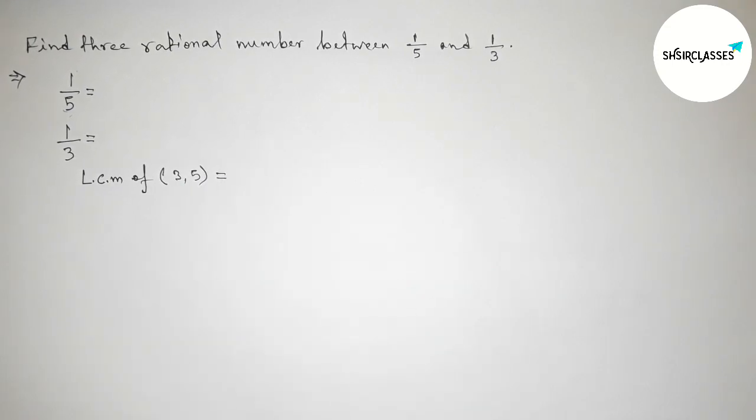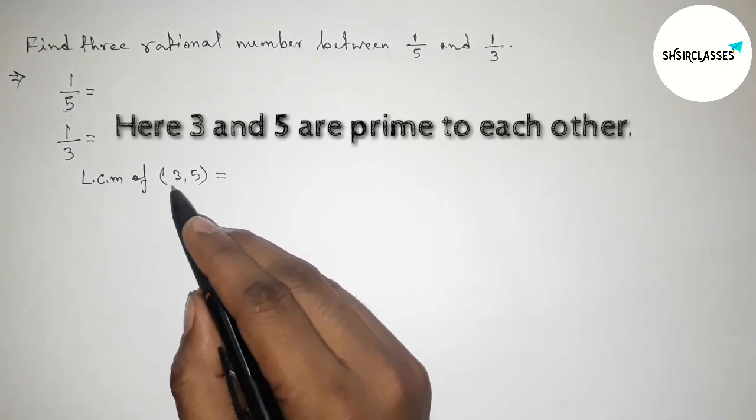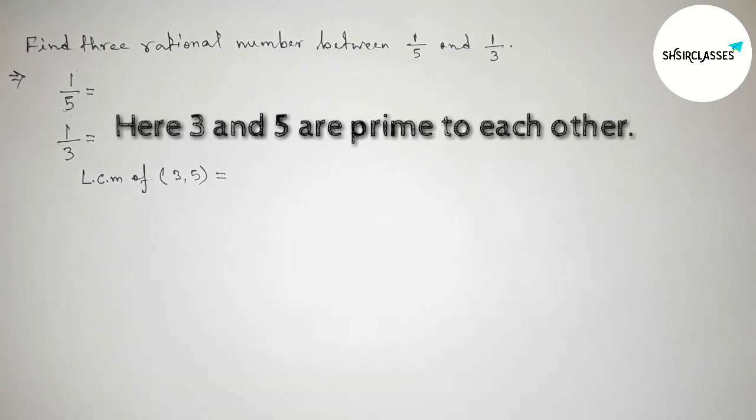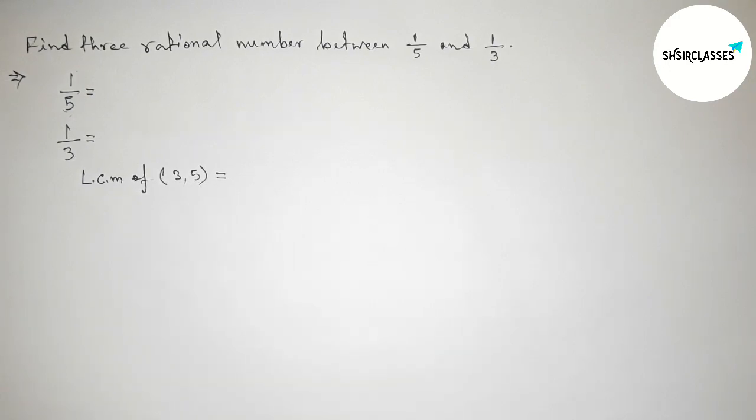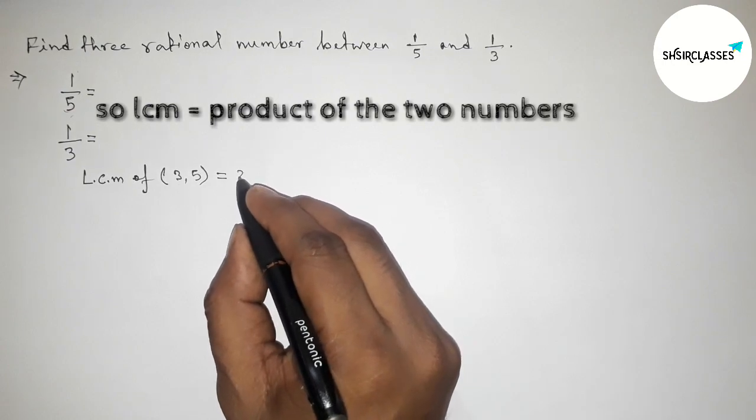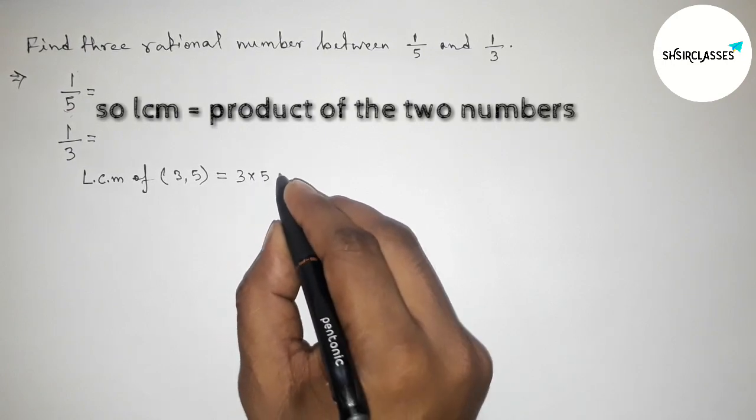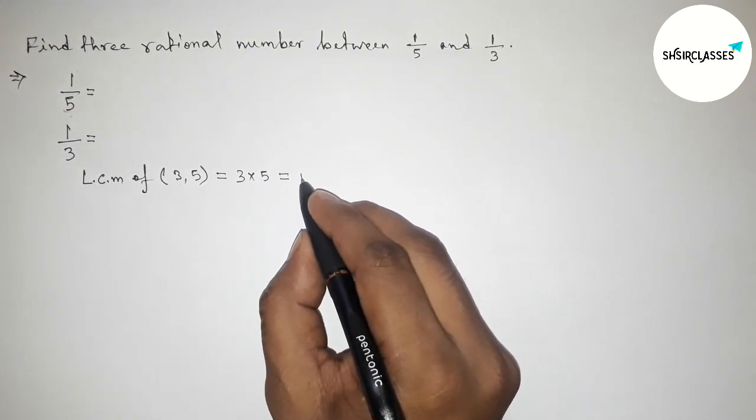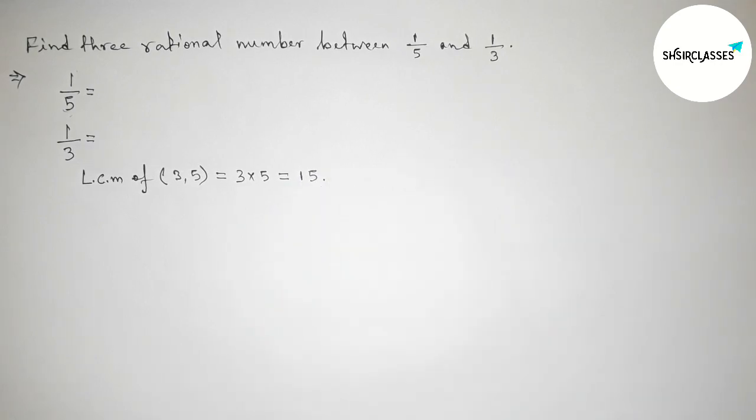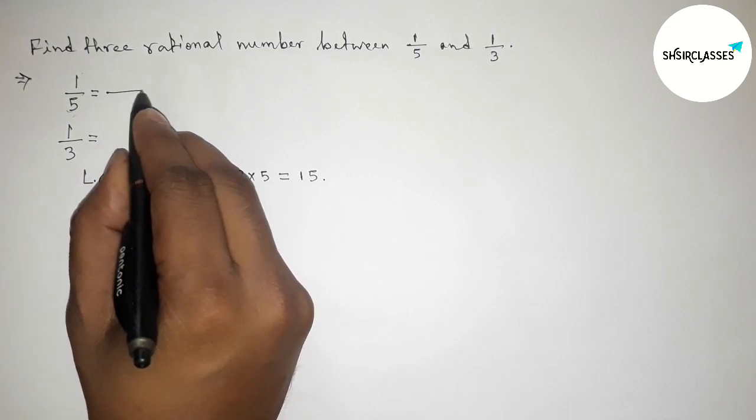Finding LCM of 3 comma 5. Here 3 and 5 are prime to each other, so the LCM will be the product of the two numbers. So 3 into 5, that is 15. We have to make the denominator 15.